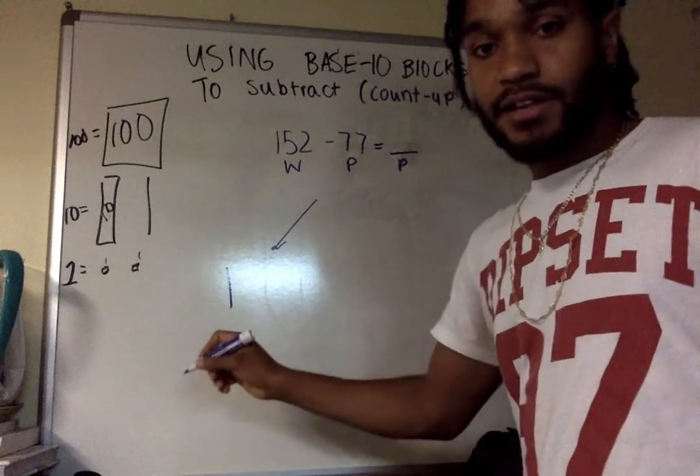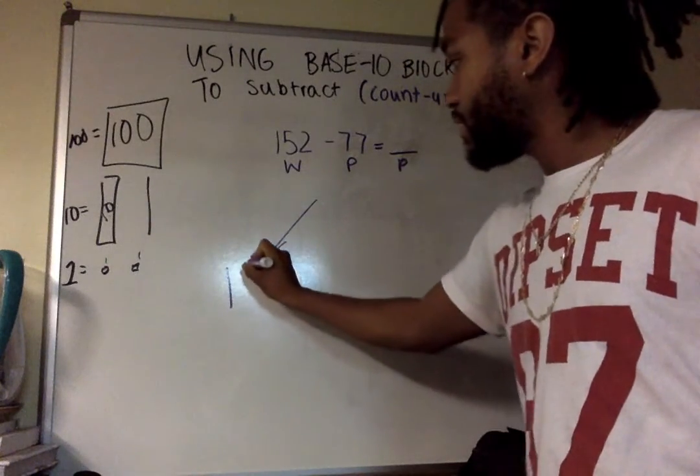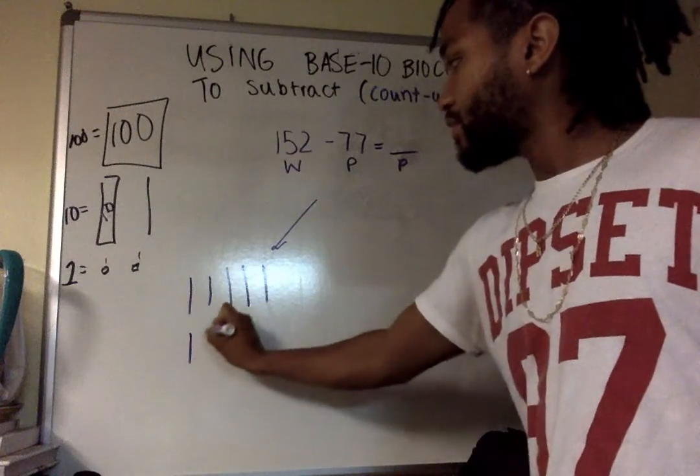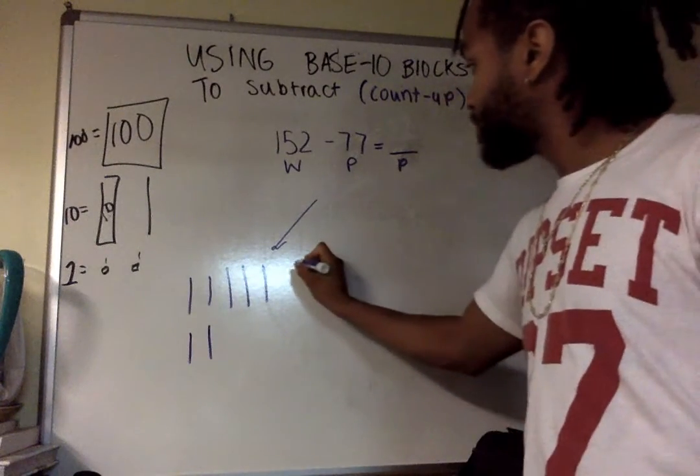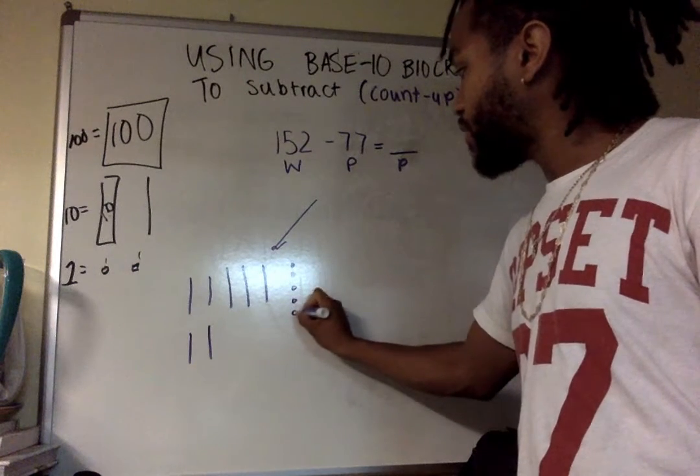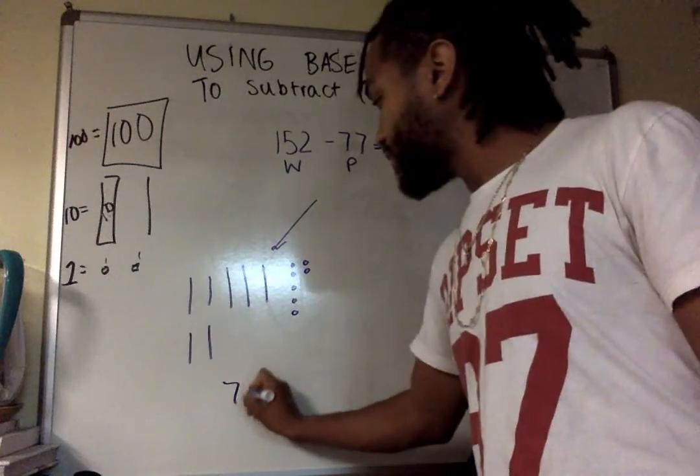For lack of time, I'm just going to draw the lines to represent 10. So, 10, 20, 30, 40, 50, 60, 70. Now I have to draw the ones. One, two, three, four, five, six, seven. Cool. This is 77 right here.